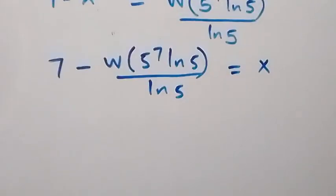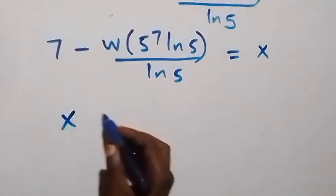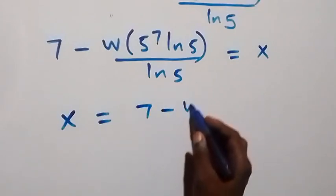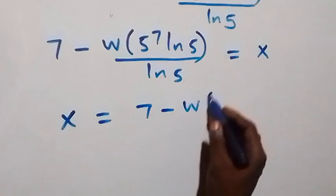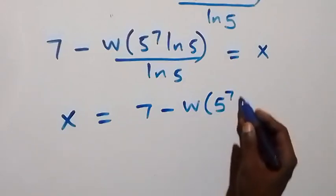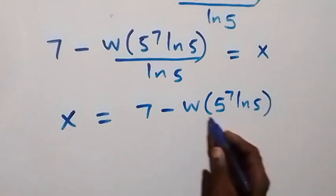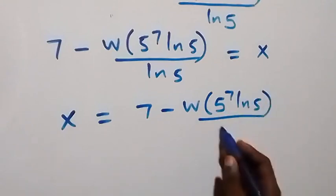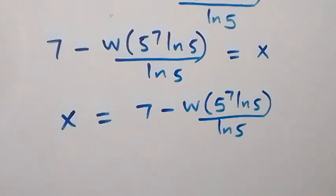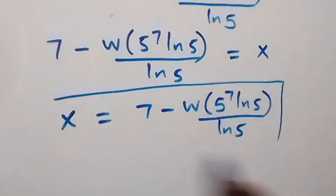Therefore, the value of X equals 7 minus W(5^7 × ln 5) over ln 5. We can also express this in decimal form by pressing this into the calculator.